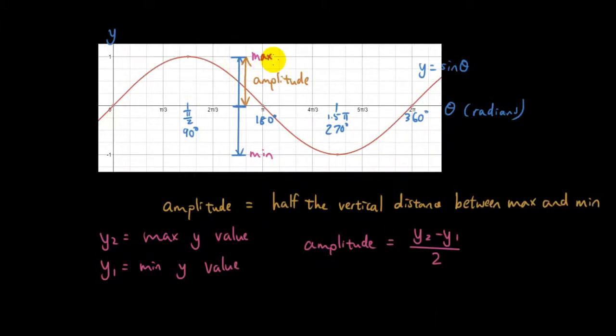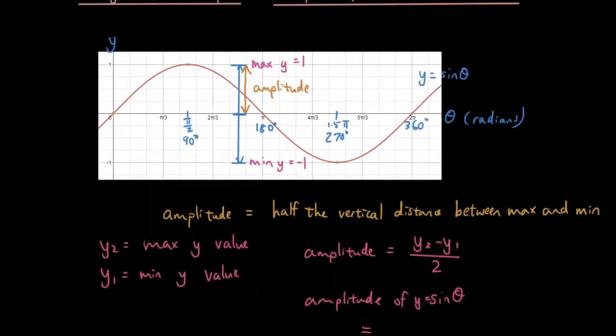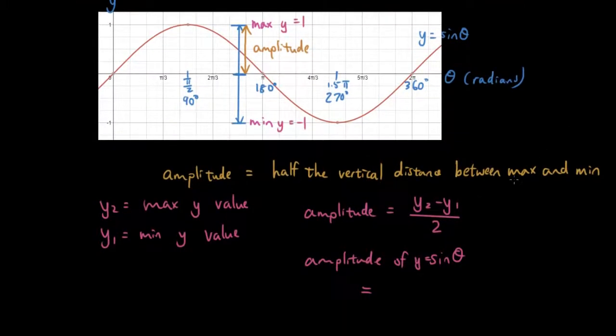If we substitute in the numbers from the graph, the maximum y value is 1, the minimum y value is negative 1. So the amplitude is 1 minus negative 1 divided by 2. That's 1 plus 1 divided by 2, which is 2 divided by 2, which is 1.